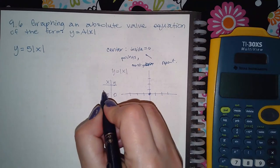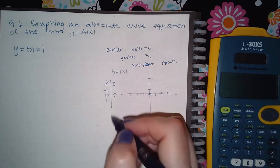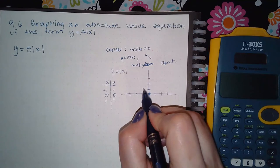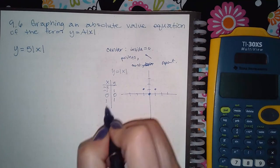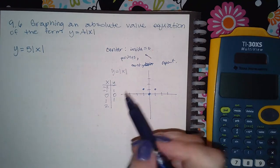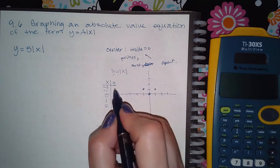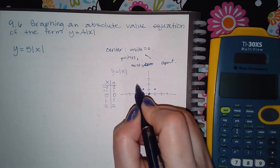If you plug in negative 1 or positive 1, the absolute value of negative 1 and the absolute value of positive 1 are both positive 1. So I get this point here and this point here. The same with negative 2 and positive 2. The absolute value of negative 2 and the absolute value of positive 2 are positive 2. So you end up with these points here.